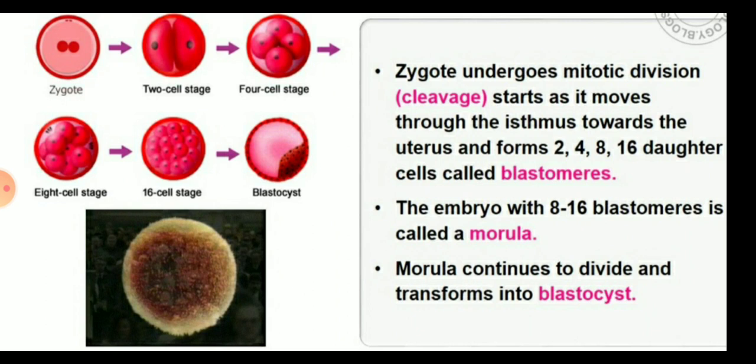You can see the cleavage of the zygote, which means mitotic division. Mitotic divisions occur in the zygote as cleavage starts, moving through the isthmus towards the uterus, forming 2-celled, then 4-celled, then 8-celled, then 16-cell stage. These 16 daughter cells are called blastomeres, and this stage is called the blastocyst.